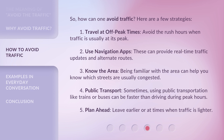So, how can one avoid traffic? Here are a few strategies. One, travel at off-peak times — avoid the rush hours when traffic is usually at its peak. Two, use navigation apps, which can provide real-time traffic updates and alternate routes. Three, know the area — being familiar with it can help you know which streets are usually congested. Four, public transport — using trains or buses can sometimes be faster than driving during peak hours. Five, plan ahead — leave earlier or at times when traffic is lighter.